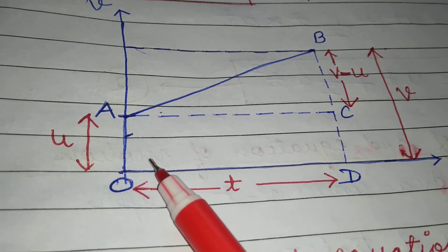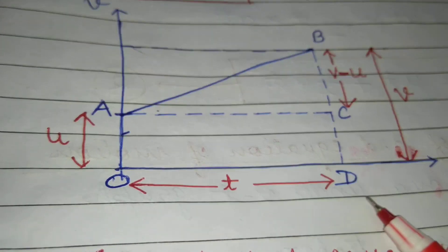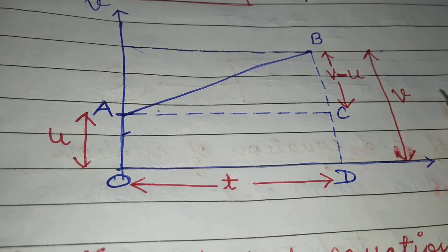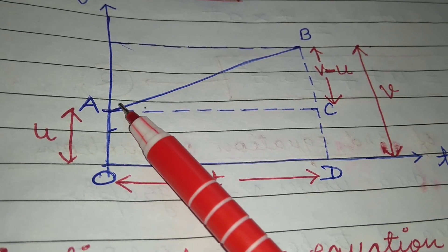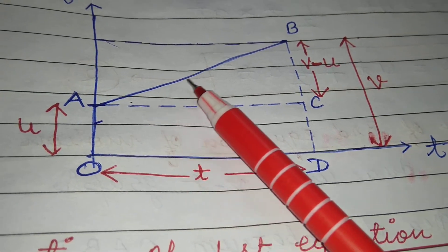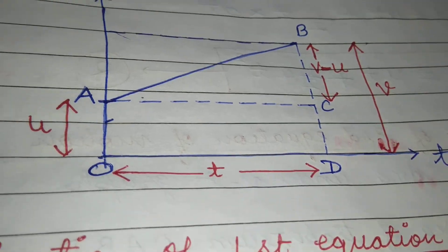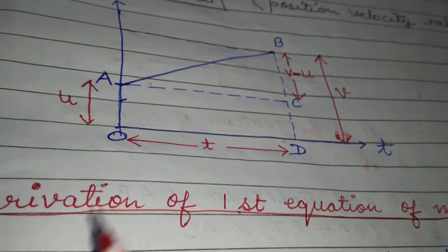Now suppose we have a body whose initial velocity is u, and after t seconds its velocity becomes v, and its acceleration is a. So it increases with uniform acceleration. So for first equation of motion...